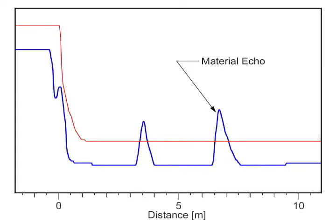In this example, the true material echo is the second echo. The first echo is an echo from a pipe entering the vessel near the top. We confirm this by visually inspecting the vessel and comparing the distance to the pipe to the distance shown on the echo profile.